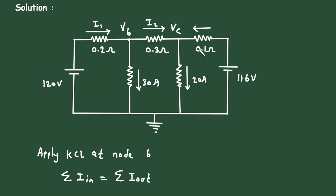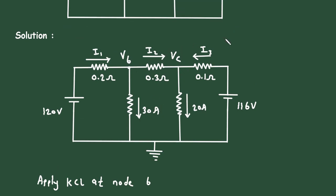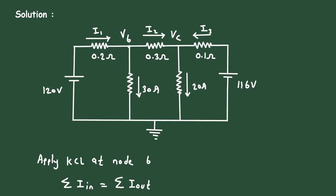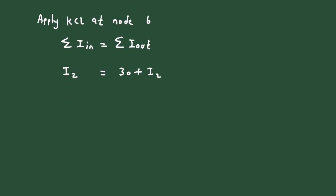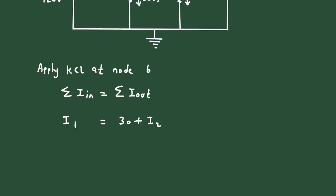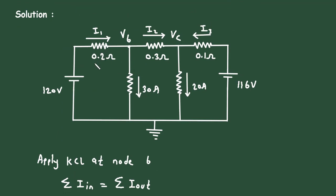Let's say this current is I2, this current is 20 amperes, and let's say this current is I3. At this node, the entering current is I1 only, and the leaving currents are 30 amperes plus I2. Now we will write I1 in voltage form, so it will be (120 minus VB) divided by 0.2 ohms.